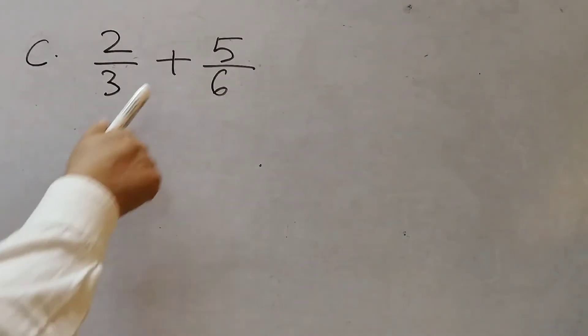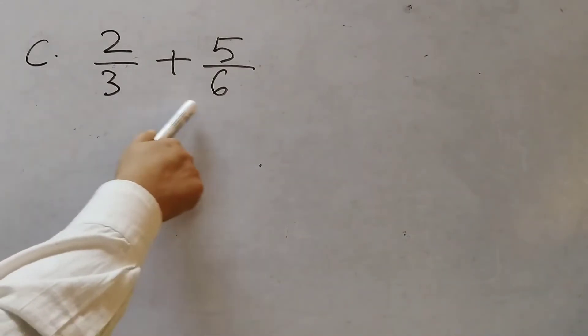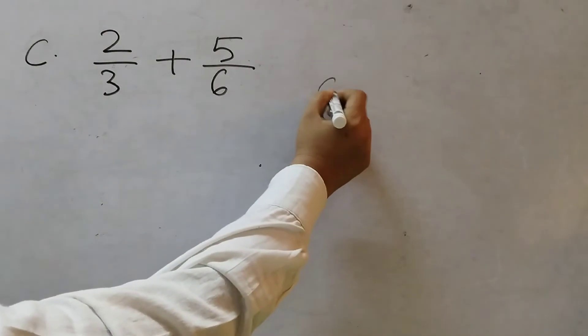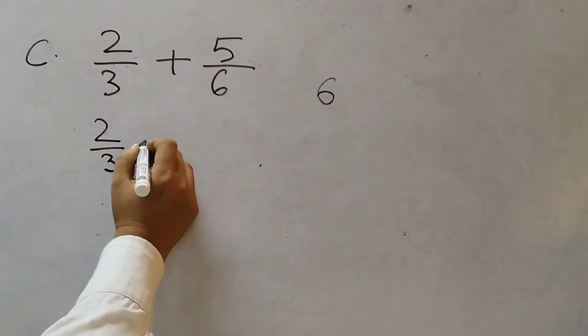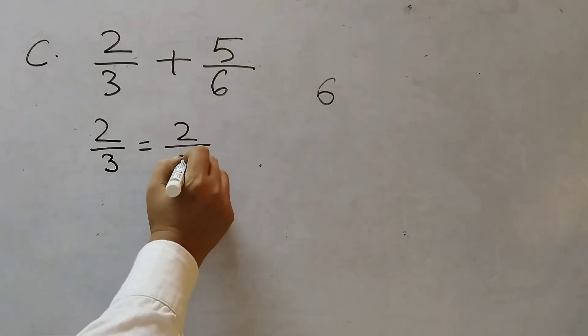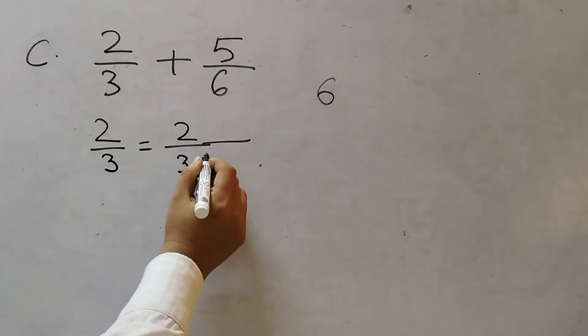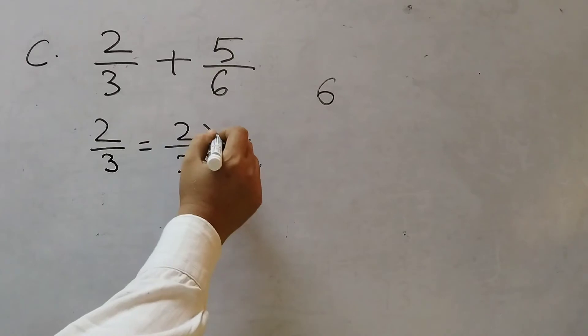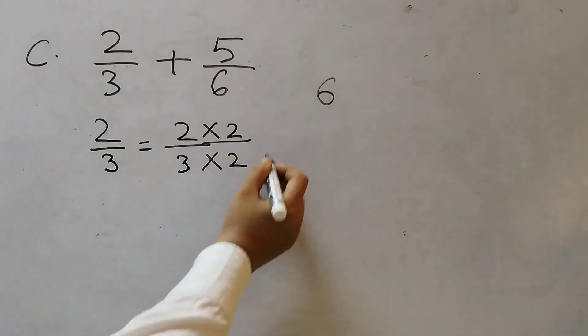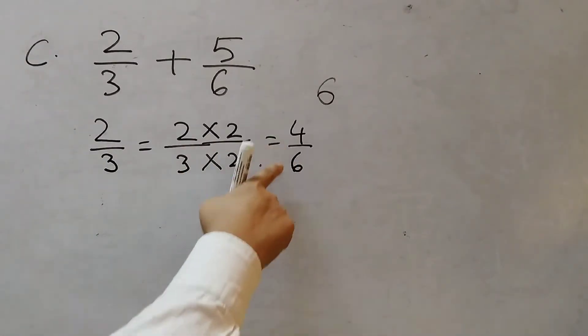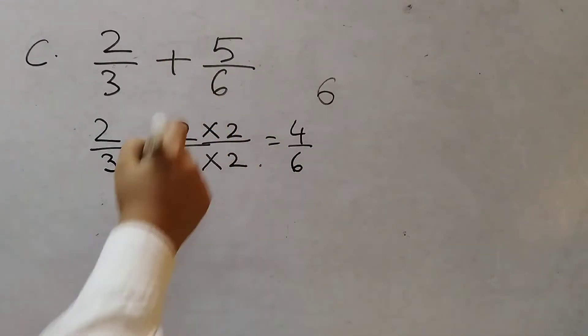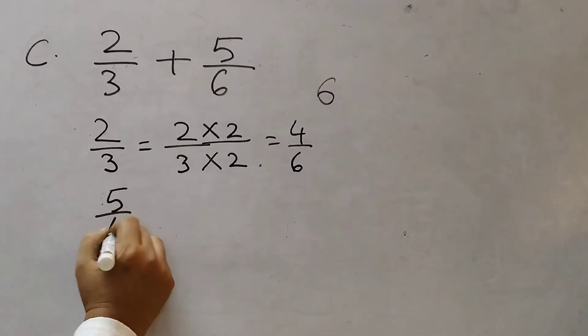Next one is 2 by 3 plus 5 by 6. Denominators are different. So we need to find the smallest common multiple, which is 6. The smallest common multiple is 6. So first we will take 2 by 3. 2 by 3. 3 into 2 is 6. Right. So multiply by 2 here also. 2 into 2 is 4. 4 by 6. 2 by 3 becomes 4 by 6.